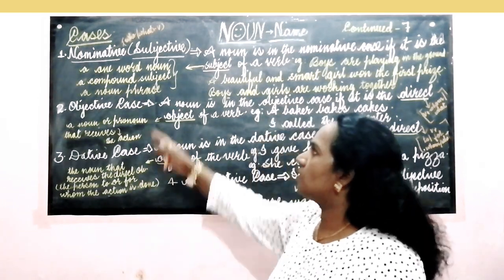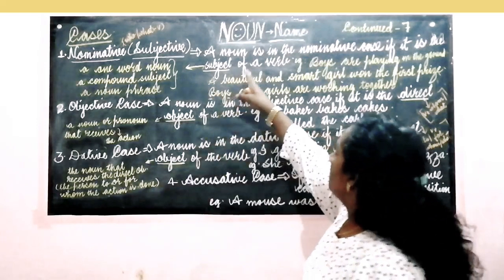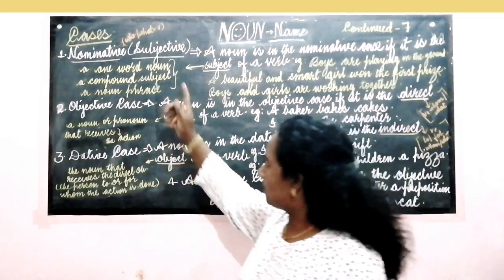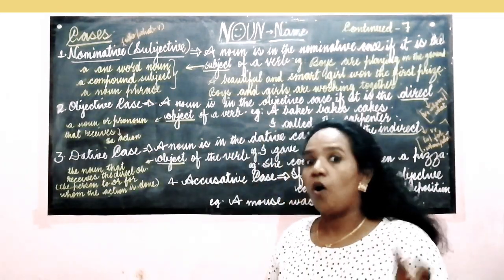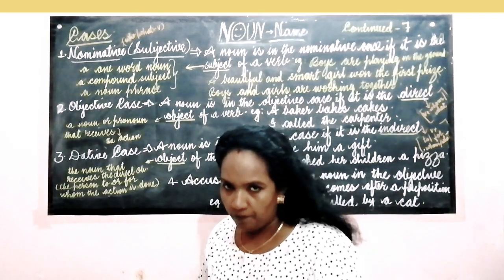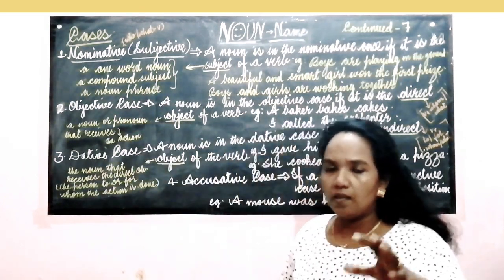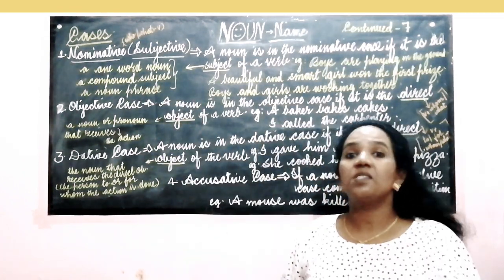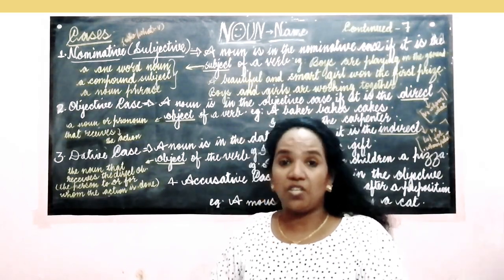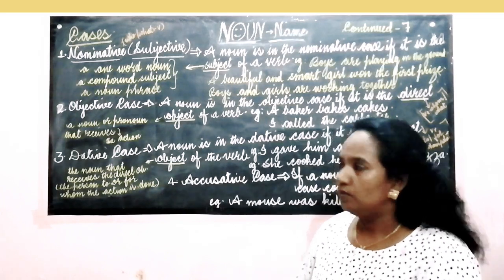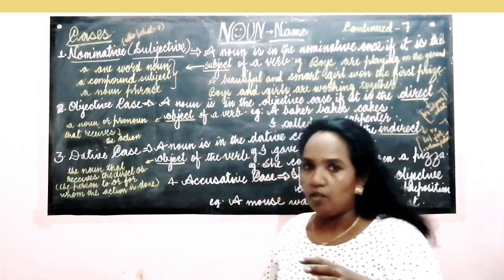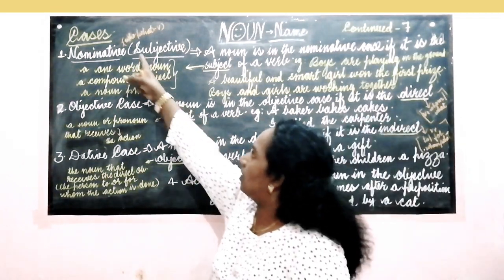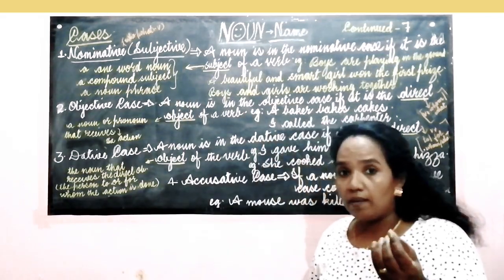A noun is in the nominative case if it is the subject of a verb. A noun — whether a simple word noun, a compound subject, or a noun phrase — can be called a subject. A pronoun can also come as a subject. For example: I am playing. She is a good girl. Boys are playing. Who is playing? I am. Who are? Boys are. By placing the question who or what with the main verb, we may get the subject.